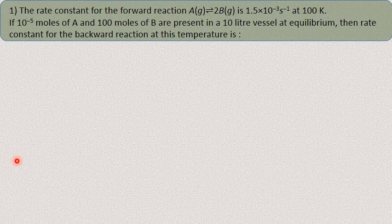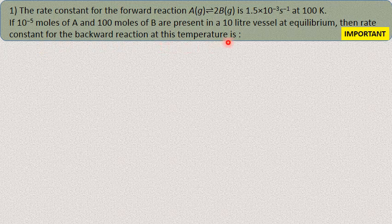First question: the rate constant for the forward reaction A getting converted to 2B is 1.5×10⁻³ per second at 100 Kelvin. If 10⁻⁵ moles of A and 100 moles of B are present in a 10-liter container at equilibrium, then the rate constant for the backward reaction at this temperature needs to be determined.